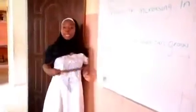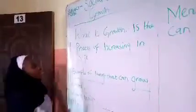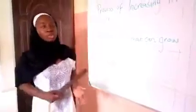Again, examples of things that can grow are: animals can grow, human beings can grow and increase bigger, plants can grow and increase bigger. Growth is the process of increasing in size. Examples of things that can grow are plants, animals, and human beings.